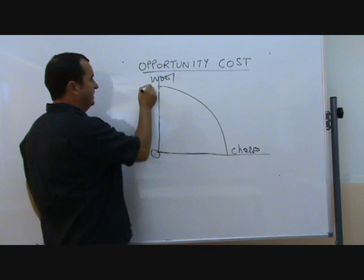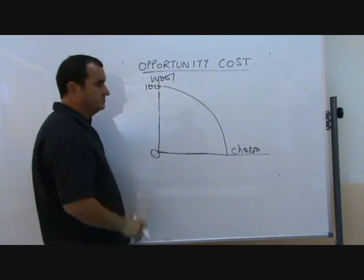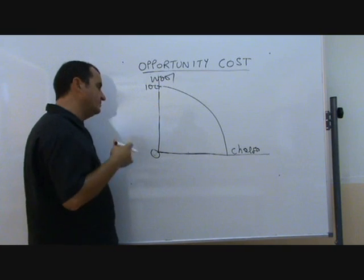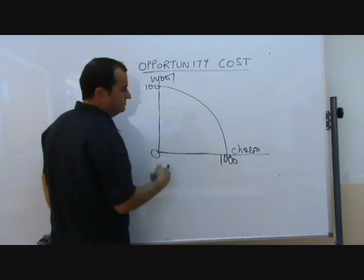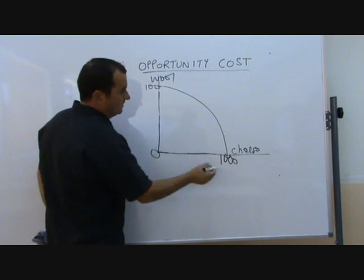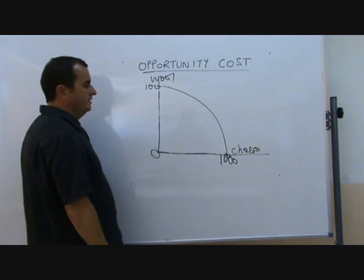Let's imagine the country devotes all its resources to producing wool. It can make, let's say, 100 units of wool and zero cheese. Alternatively, if they devote their resources to cheese production, they could make 1,000 units of cheese but no wool. They would be at this point.